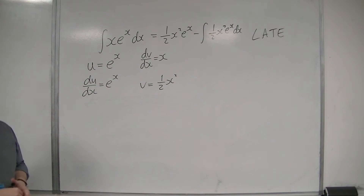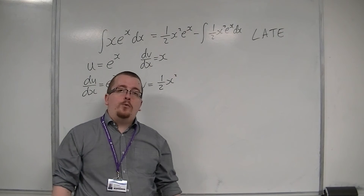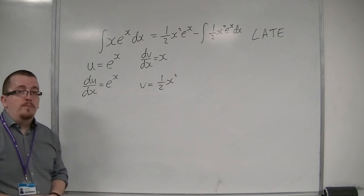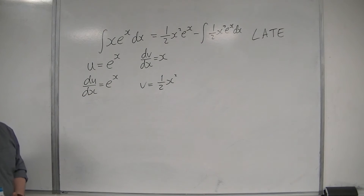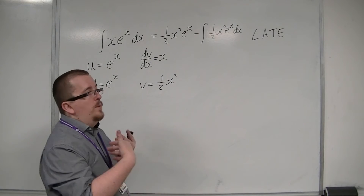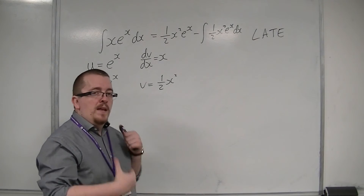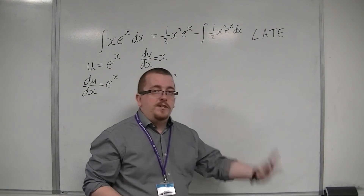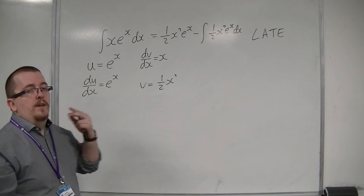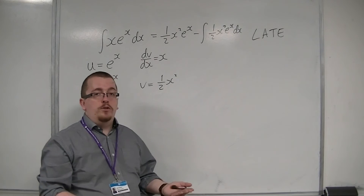Now the problem here is that I then need to integrate 1 half x squared e to the x, for which I would need to use integration by parts again. What's going to happen is that I would get another integral with an x cubed e to the x, then an x to the 4 e to the x, and the problem will go on and on forever if I keep picking the wrong u.